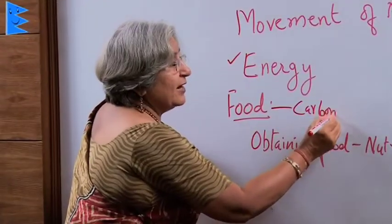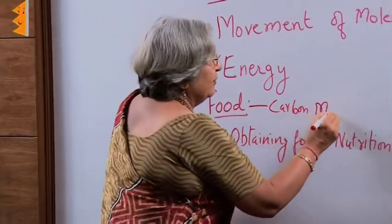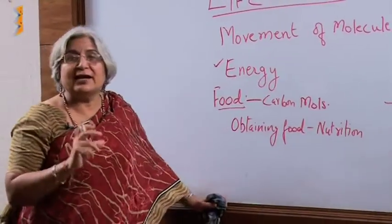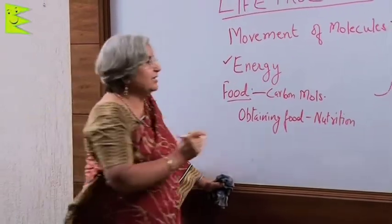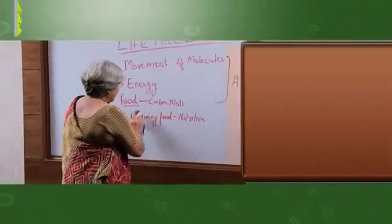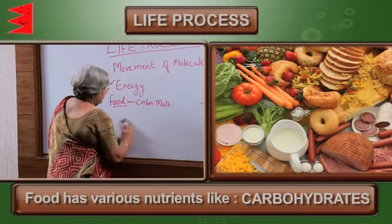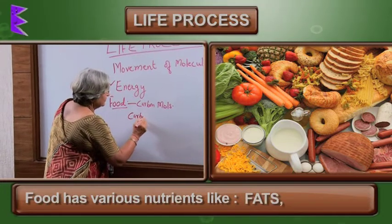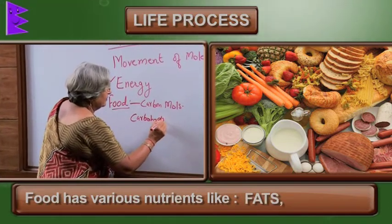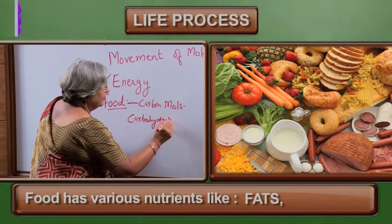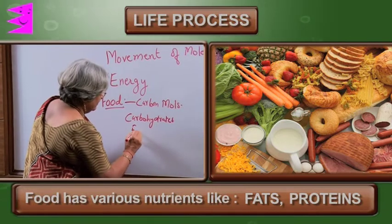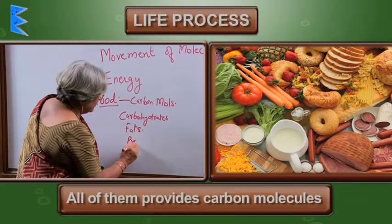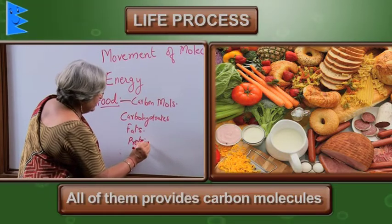That is why you know that food has various nutrients. These nutrients are carbohydrates, fats, and proteins — all of them provide carbon molecules.